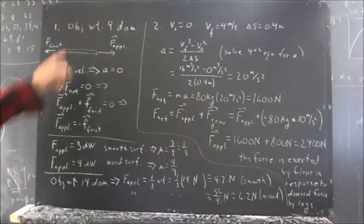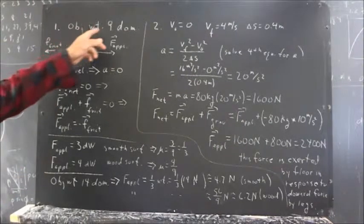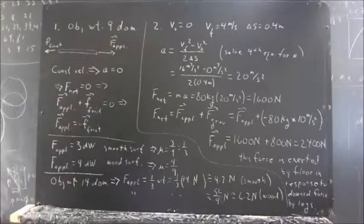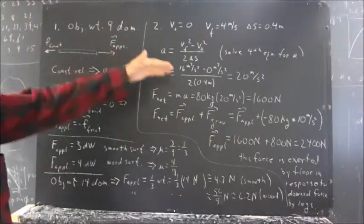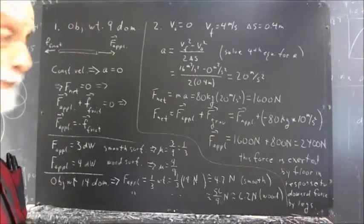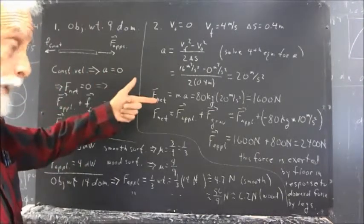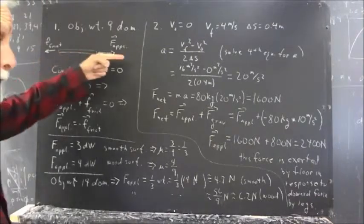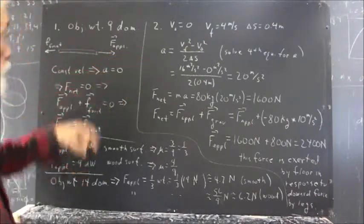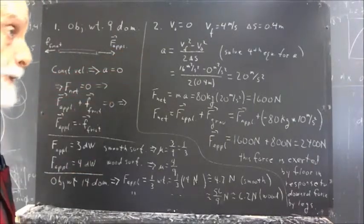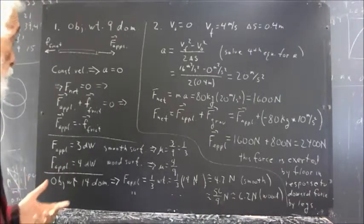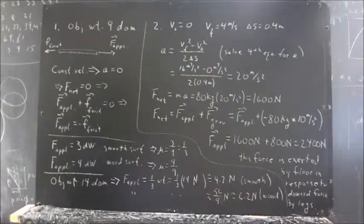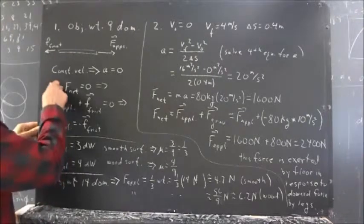In the first problem, we have an object with a weight equal to the weight of 9 dominoes, and we're sliding it across the table at constant velocity. When we slide it across the table, friction exerts a force in one direction and our applied force exerts a force in the other direction. Since the velocity is constant, acceleration is 0, and it follows that the net force is 0.